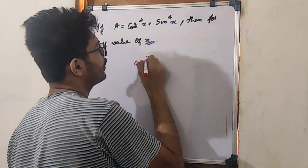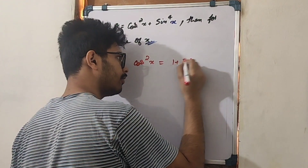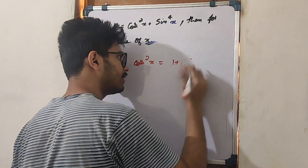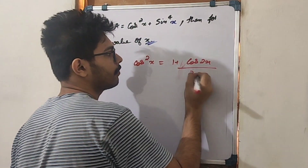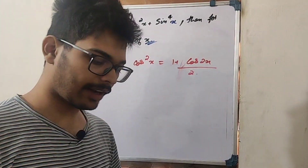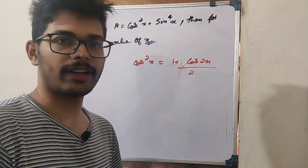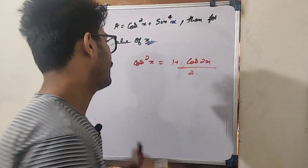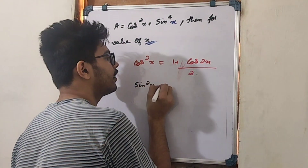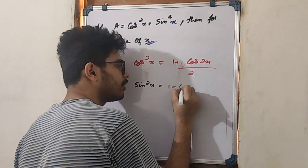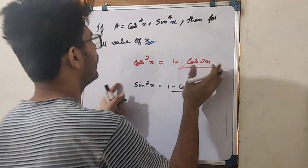We know that cos²x = (1 + cos2x) / 2, and cos2x = 2cos²x − 1, and sin²x = (1 − cos2x) / 2. We will substitute these identities.